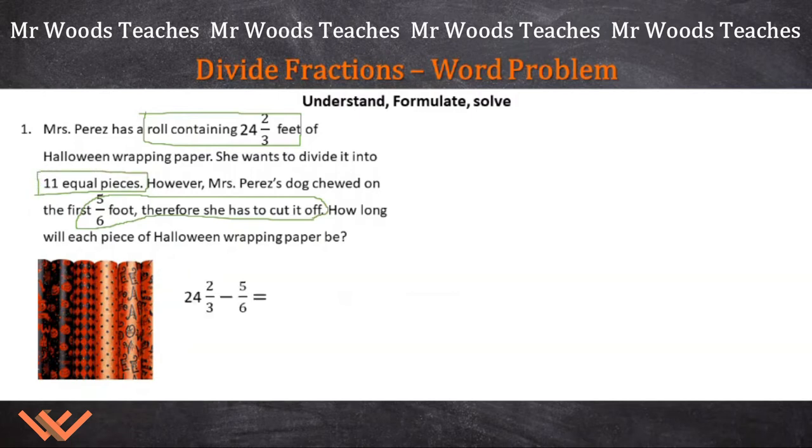This is how I would set it up first. I would have 24 and 2/3 minus 5/6. But wait, we have fractions here with different denominators. So we have to have a common denominator. The common denominator between the two is 6. But even if we multiply the top and bottom by 2, we'd have 4/6, but we need more sixths. What do we need to do? We can borrow 6/6 from the ones column here and make that 23.